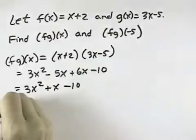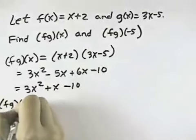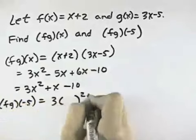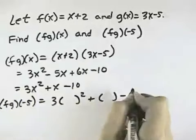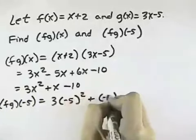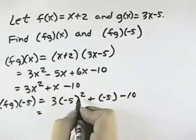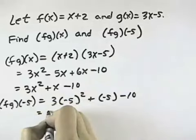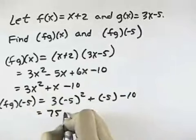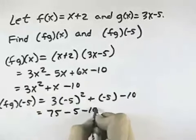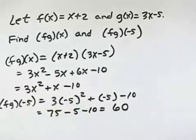And we can evaluate this at negative 5 by taking out our x's and replacing them with negative 5. When we do that, negative 5 squared is 25 times 3 is 75, minus 5 minus 10 will leave us with 60.